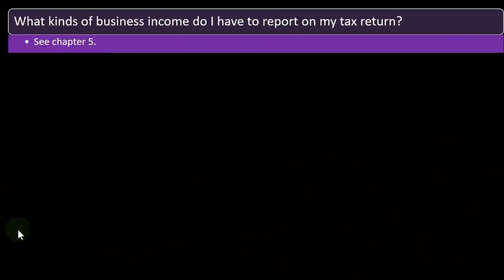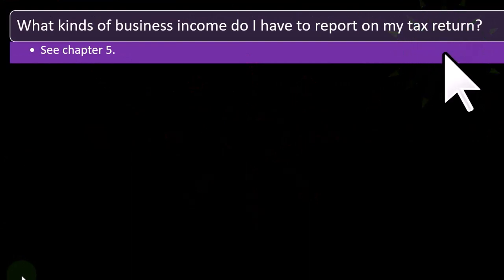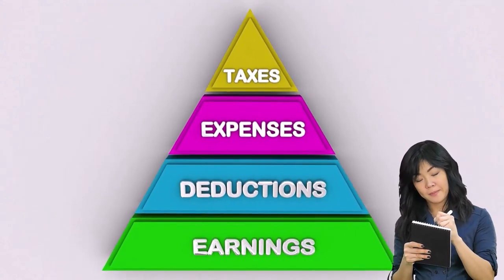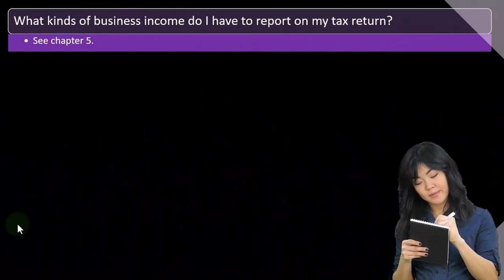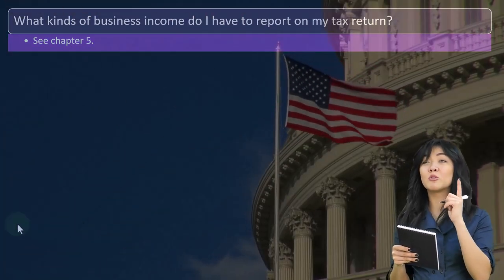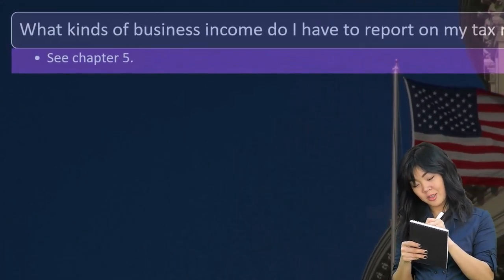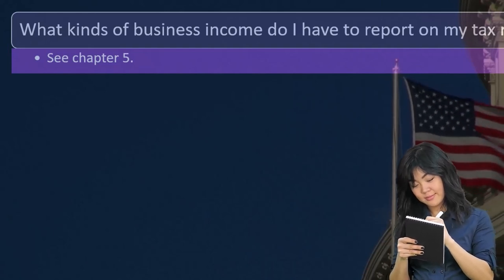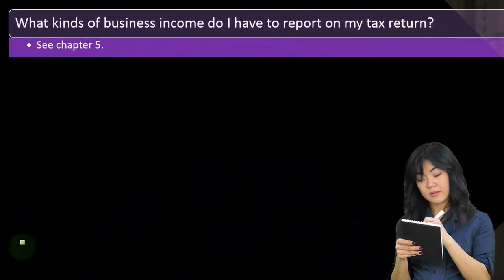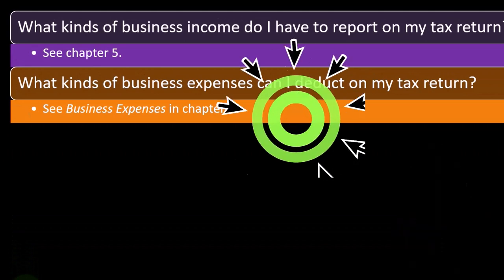What kind of business income do I have to report on my tax return? The IRS wants you to report all income unless there's an exception provided by them. Are there any exceptions we don't have to include in income? Which things go on the Schedule C versus elsewhere on the tax return? Are there any benefits to reporting on the Schedule C versus somewhere else? You can jump to Chapter 5 if you want to read up on that.